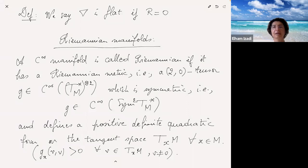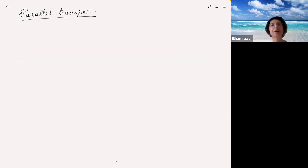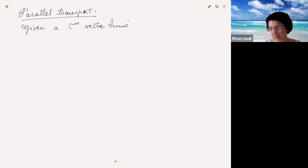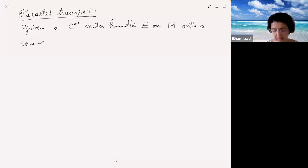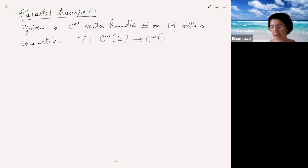When you have a Riemannian metric and a vector bundle with a connection, you can do something called parallel transport. Suppose we have a C-infinity vector bundle E on M with a connection nabla going from C-infinity of E to C-infinity of E tensor TM-dual.